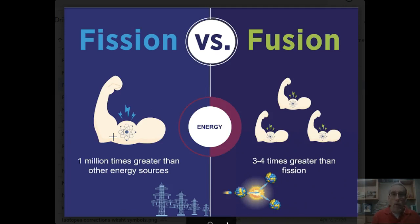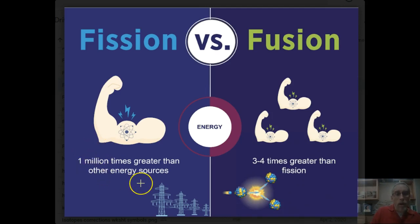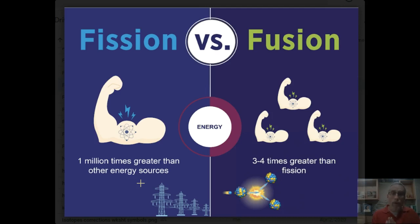Let's look at the amount of energy involved in these nuclear processes. In fission — the ones we can recreate and use in power generating plants, put on submarines, and maybe someday in nuclear-powered cars — we have a million times greater energy than other energy sources. So a gram of material from a nuclear reaction would produce way, way more energy than tons and tons of material giving chemical energy. Now, in fusion, if we could get it to work practically, there's even more than that — three to four times as much. That's why the fusion process up in the sun is so very powerful.